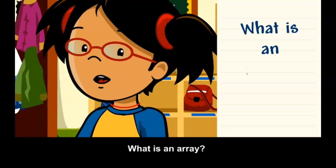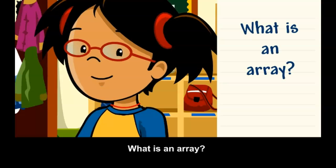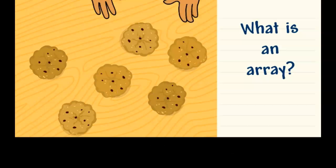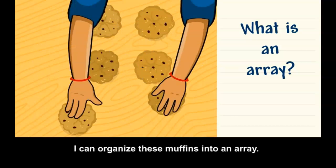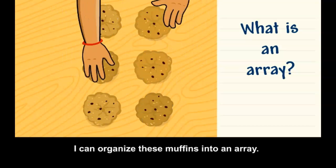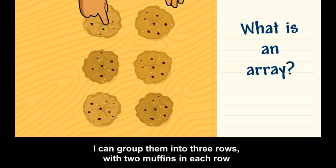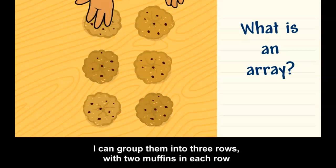What is an array? An array is a set that shows equal groups in rows and columns. I can organize these muffins into an array. I can group them into three rows with two muffins in each row.